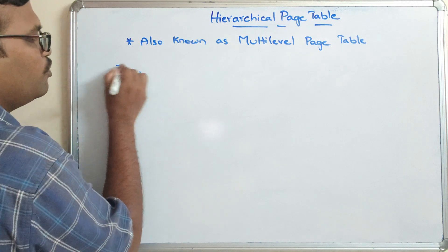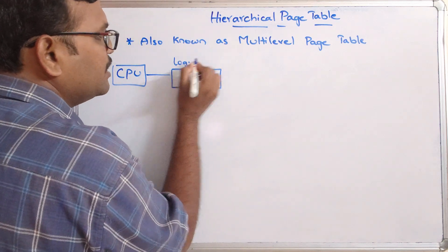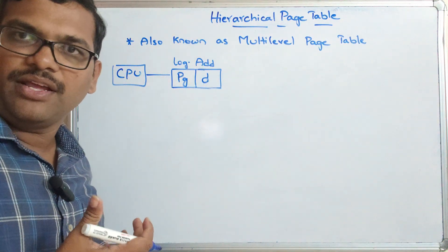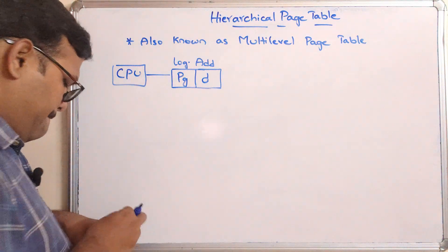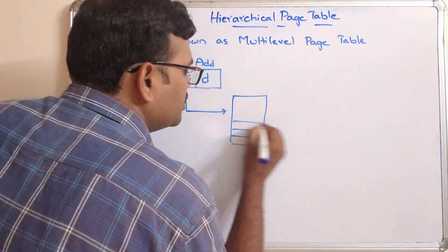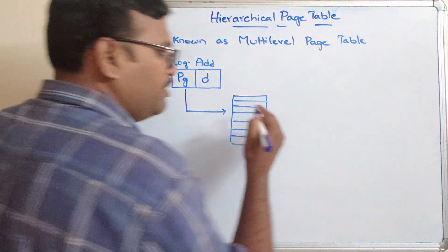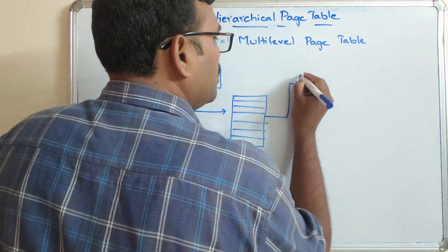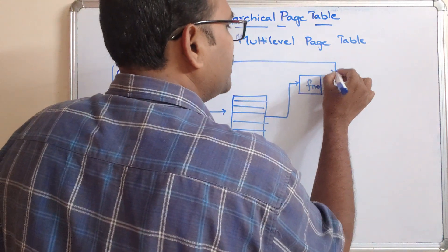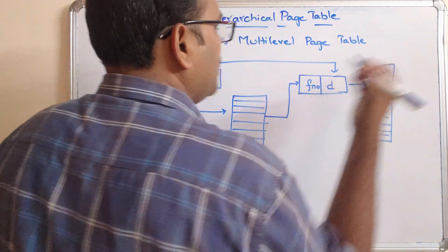We have said that there will be a CPU which will be generating the logical address. This logical address will have two parts: one is a page number, another one is a displacement or offset — the location of the instruction. This page number will be referencing the page table, which will be having a lot of entries. From here, there will be a corresponding frame number. The frame number plus the offset gives the entry in physical memory.